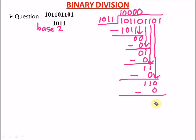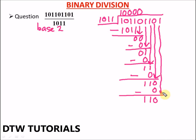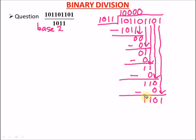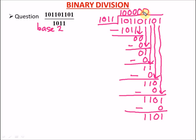We subtract: 0 minus 0 is 0. We drop down 1, and then the last digit, which is 1. Can 1011 go into 101? No, so we write zero. Zero times 1011 is zero. Subtracting: 1 minus 0 is 1. We drop down 0, giving us 10, and then 1, giving us 101. Since there are no more digits to drop down, we stop here. Our answer is 1000000 with a remainder of 1101.